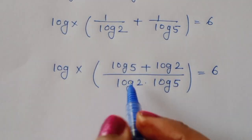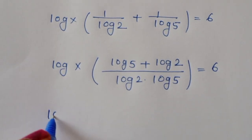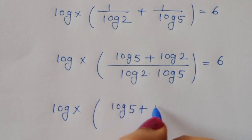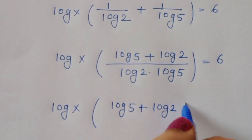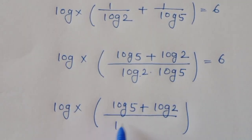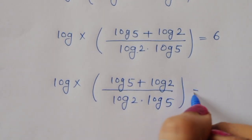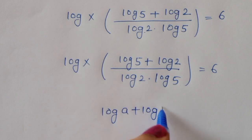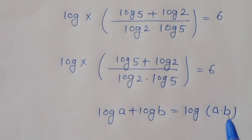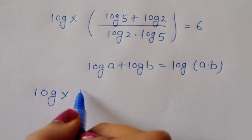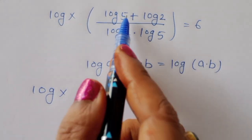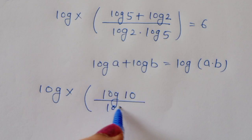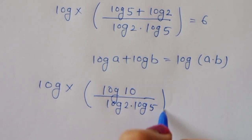Now log(2) times log(5) — we can multiply this term. Using the formula log(a) plus log(b) equals log(a times b), we can write log(5) plus log(2) as log(5 times 2), which is log(10). So we get: log(x) times log(10) divided by [log(2) times log(5)] is equal to 6.